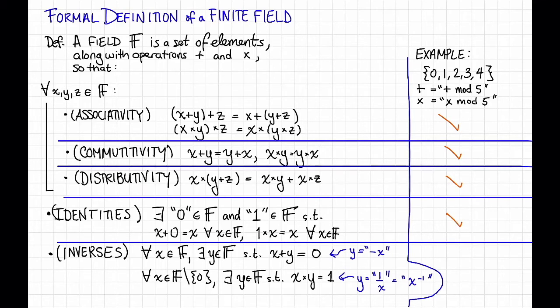The tricky bit is inverses. To verify that everything has a multiplicative inverse and an additive inverse, we can just go through all of the elements. Observe that 1 plus 4 is equal to 0 mod 5. So that means that 1 and 4 are additive inverses of each other.